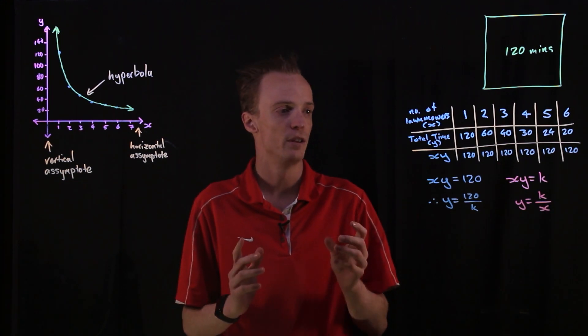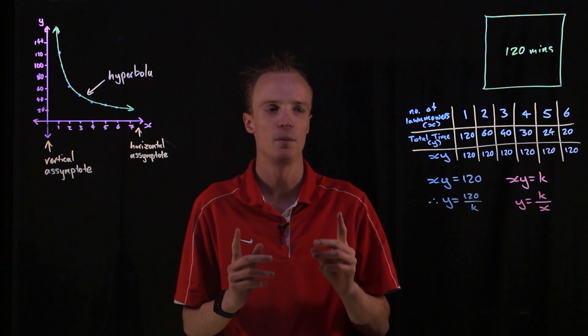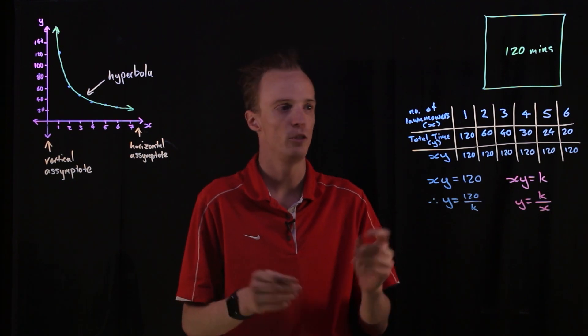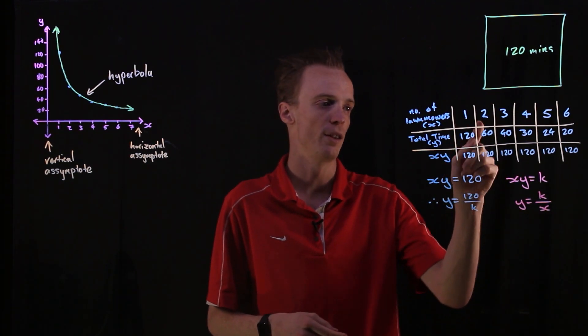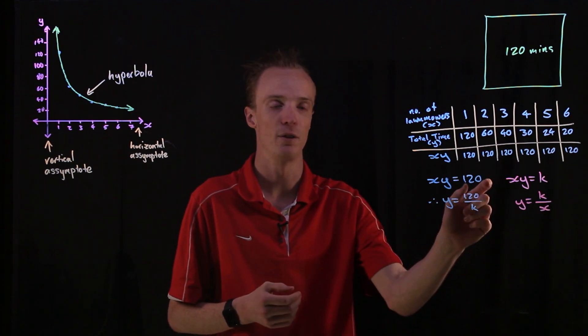Now, in summary, for two variables to be inversely proportional to one another, we should be able to multiply our two variables together each time, and it should equal the same value. If we have that, it does mean that the two variables will be inversely proportional.